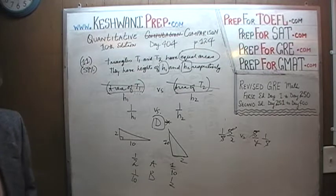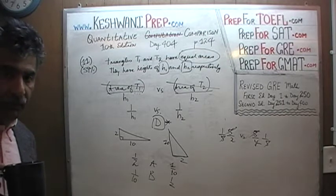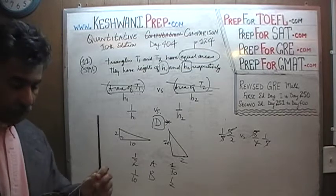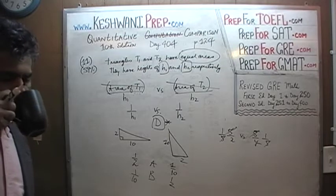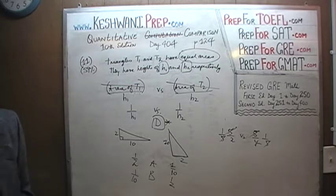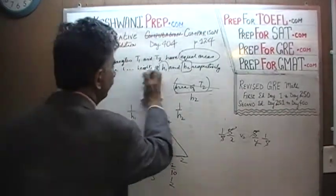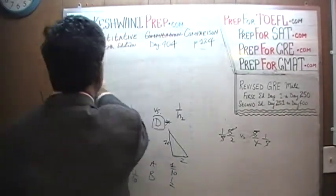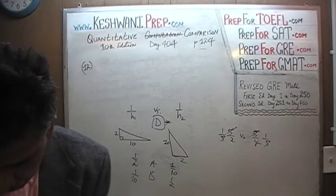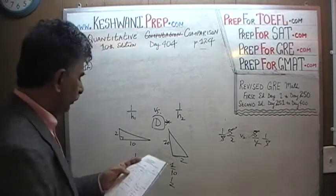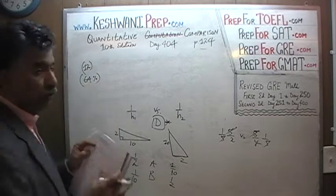Let's do the next one, number 12. 59% of people got it right, meaning 41% of the people managed to muck it up. Number 12 is a straightforward numerical problem, and about two-thirds of people got it right.